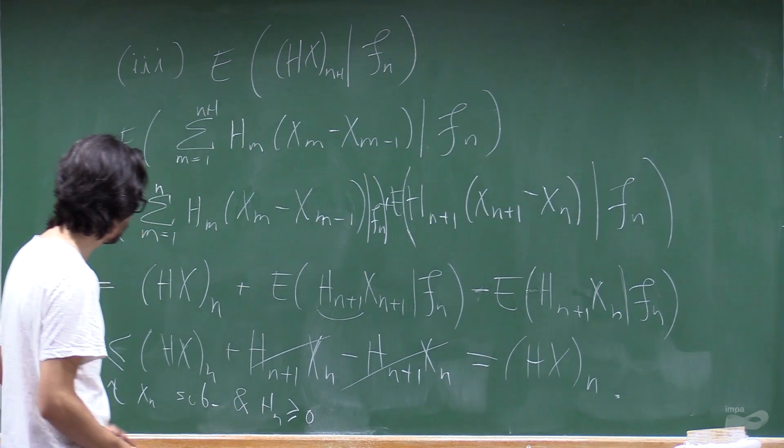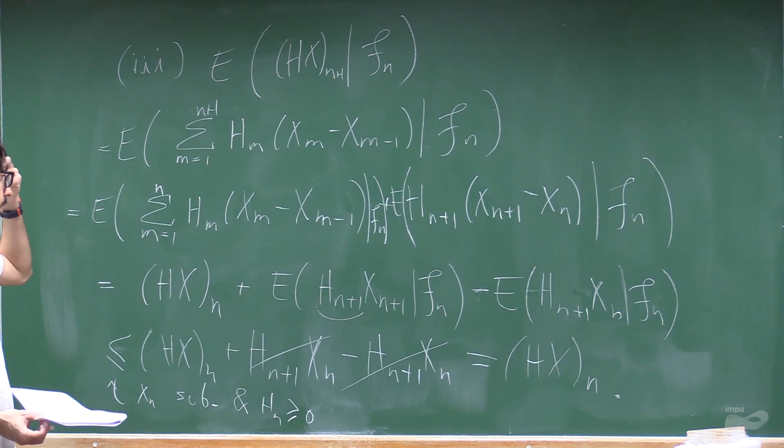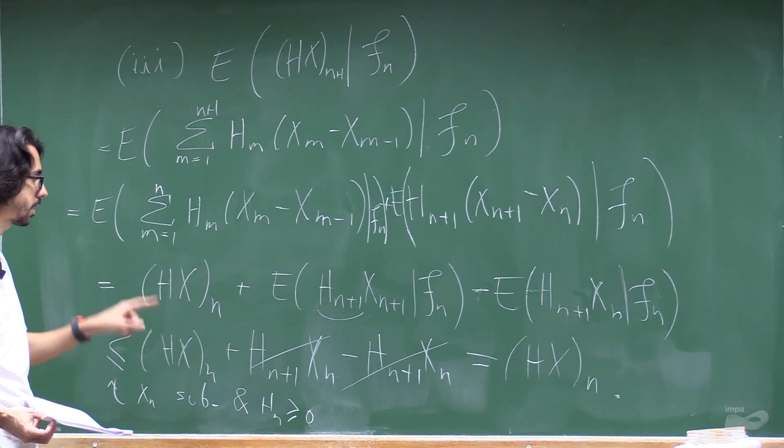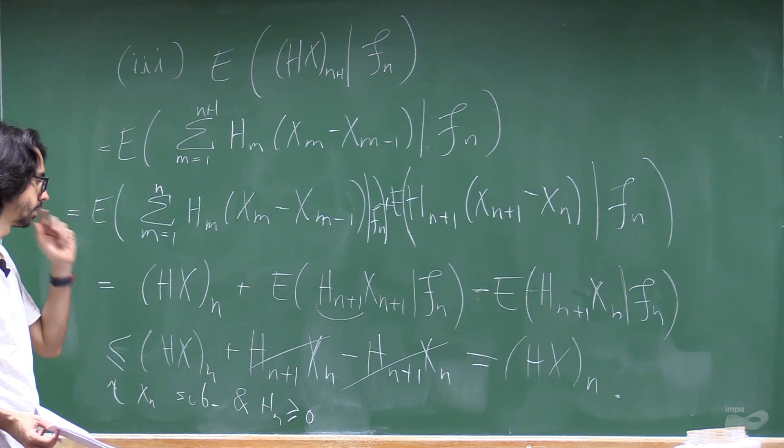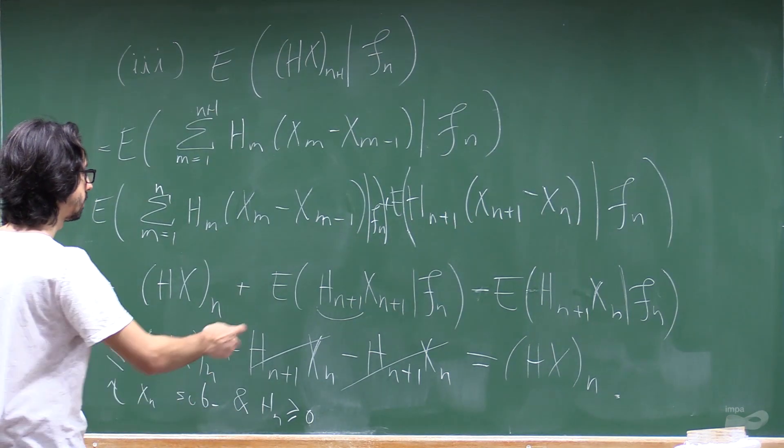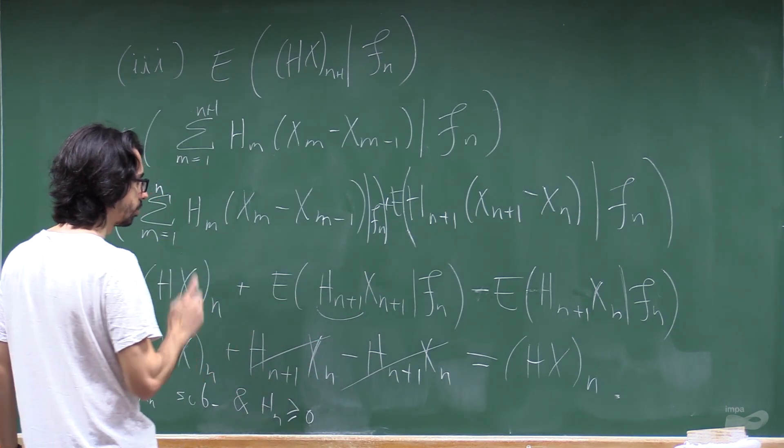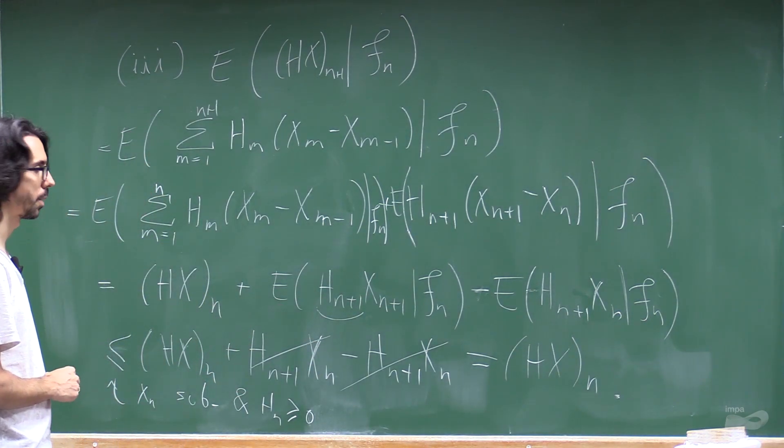So you see we used both properties. It's interesting to observe that if X is actually a martingale, then we don't need this property. Right? Because then this is going to leave and we can replace this by this without using that we are multiplying by something positive. So this is the proof.